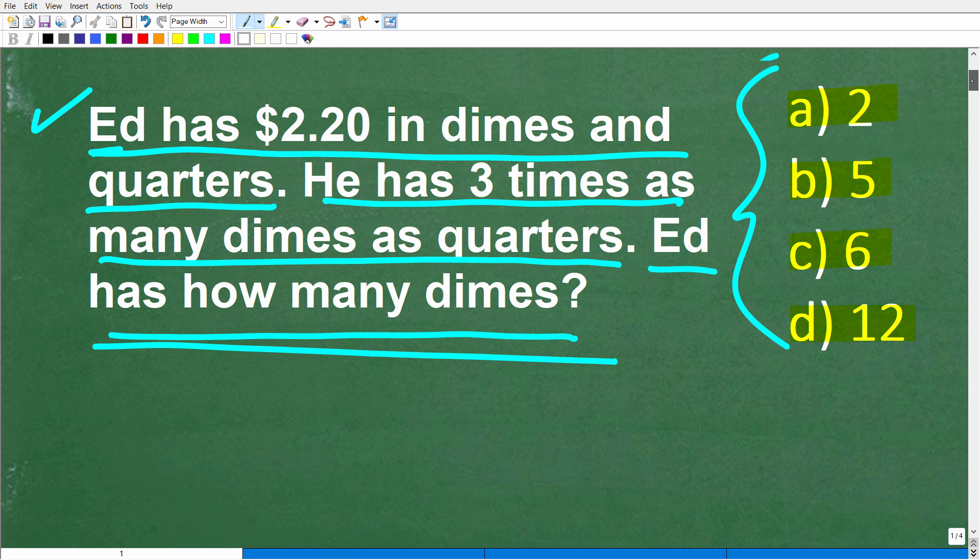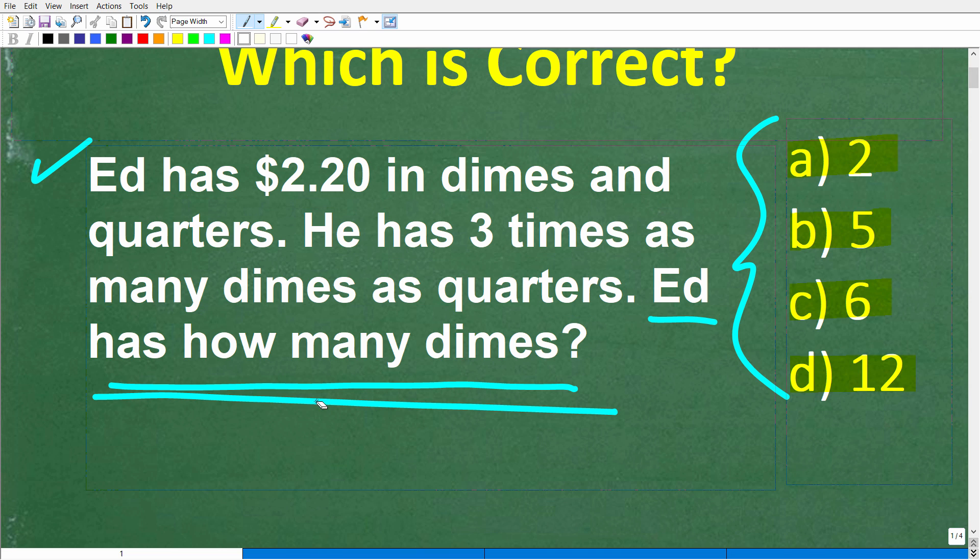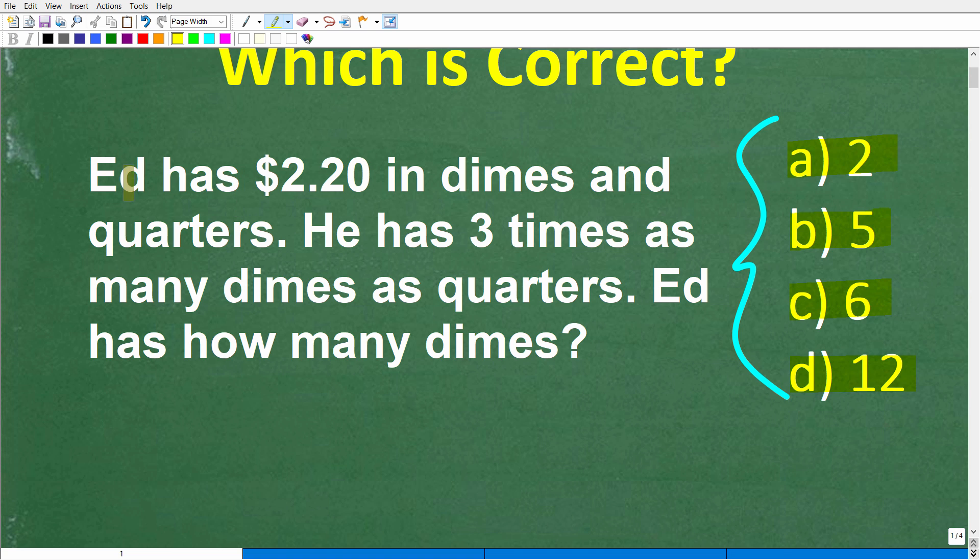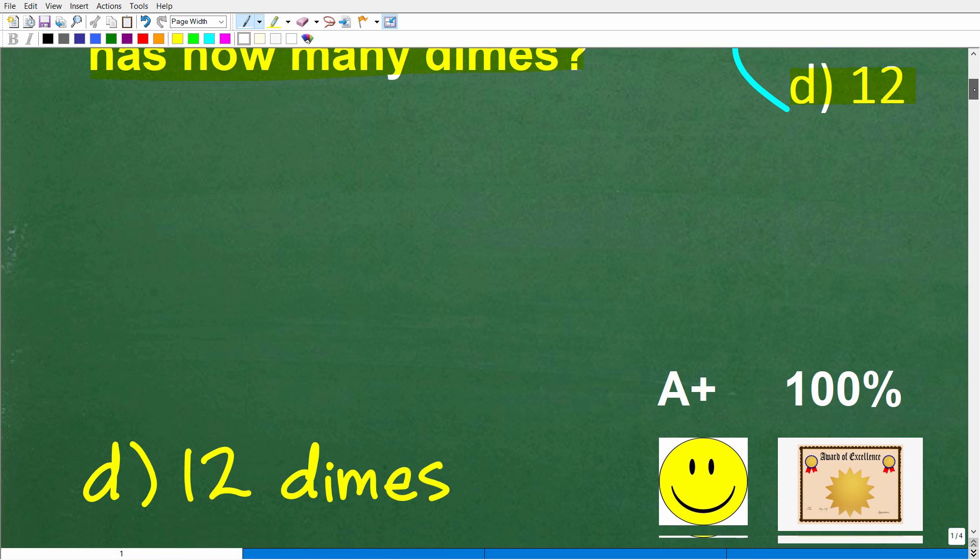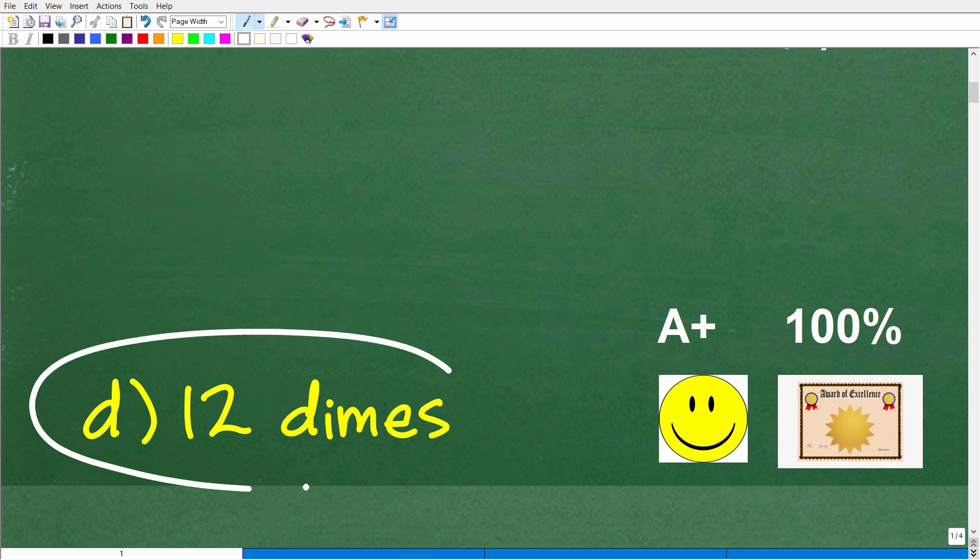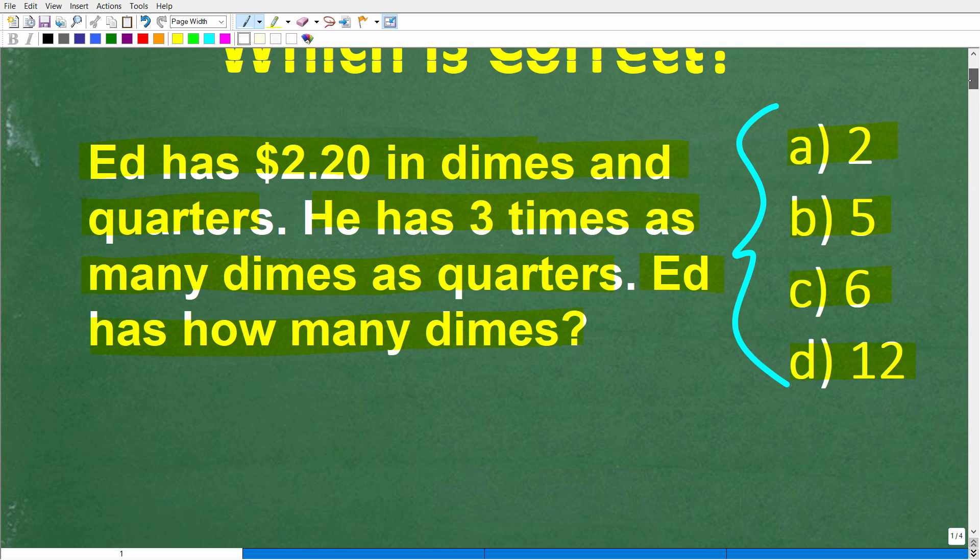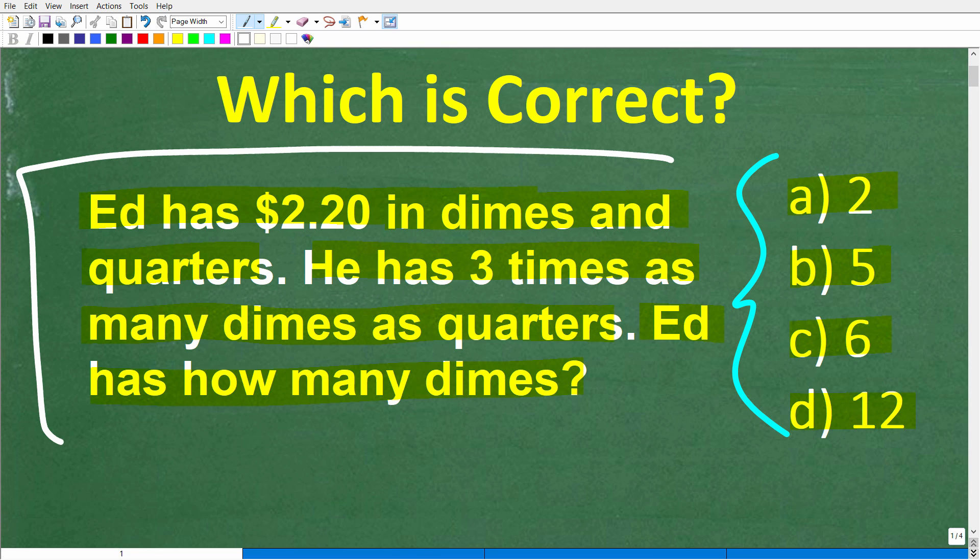Now before I show you the answer, let's take one more look at the problem. Feel free to use a calculator. Let's take a look at the answer. Ed has D, 12 dimes. If you got this right, you definitely get a happy face, an A+, a 100%, and a Certificate of Excellence for figuring out this money math word problem.